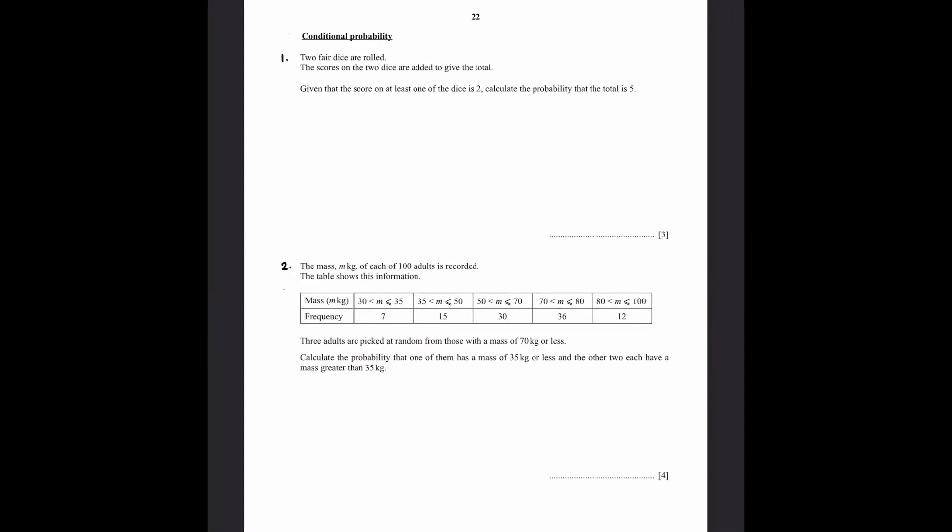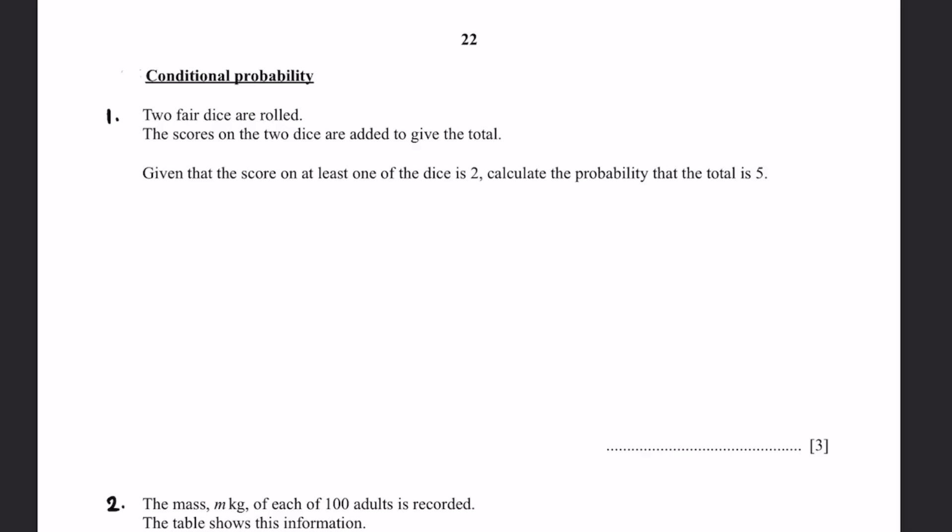Let's start. Question 1. Two fair dice are rolled. The scores on the two dice are added to give the total. Given that the score on at least one of the dice is 2, calculate the probability that the total is 5.